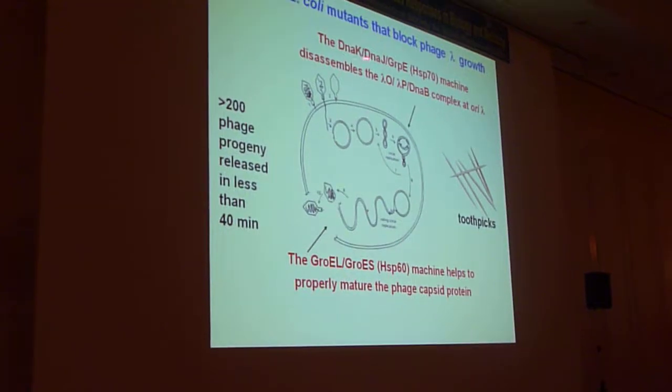We showed that DNAK, DNAJ, and GRP, in a purified system, disassembled a complex. Lambda replicates by assembling a complex, and that complex has to disaggregate. These chaperones disaggregated the complex so replication can start.